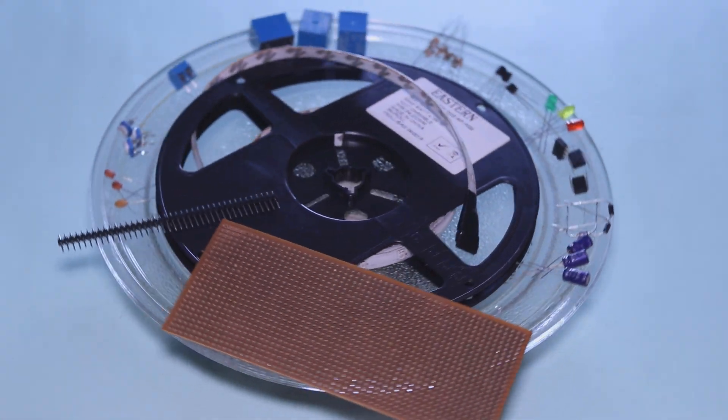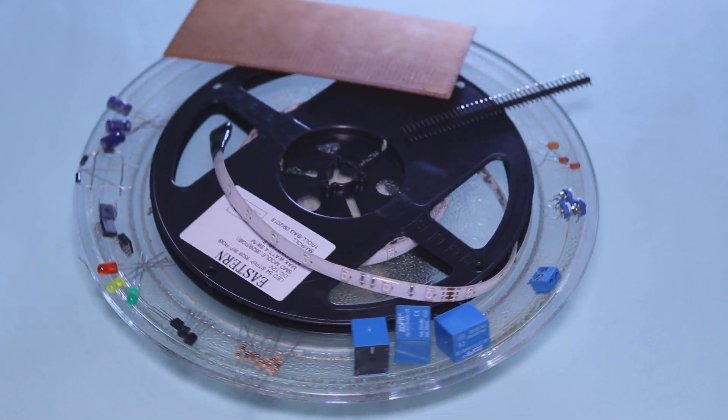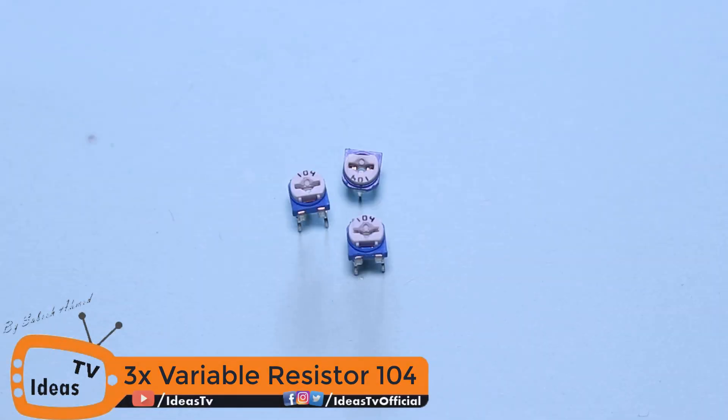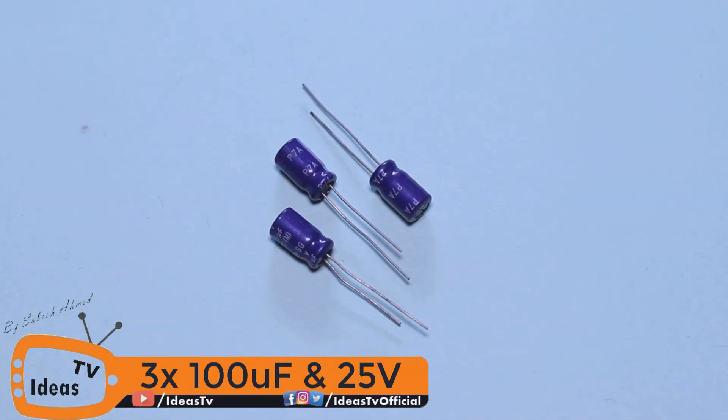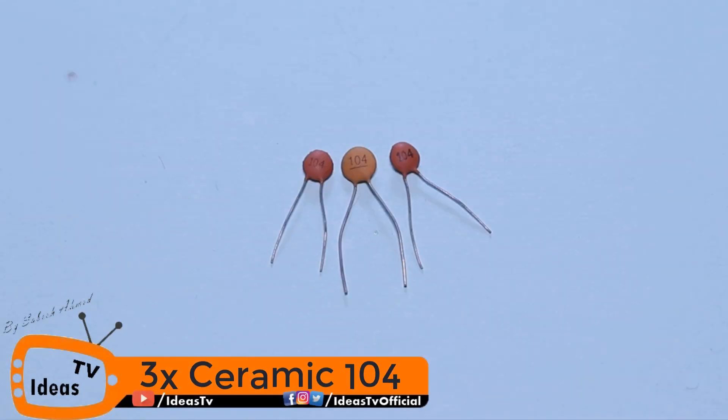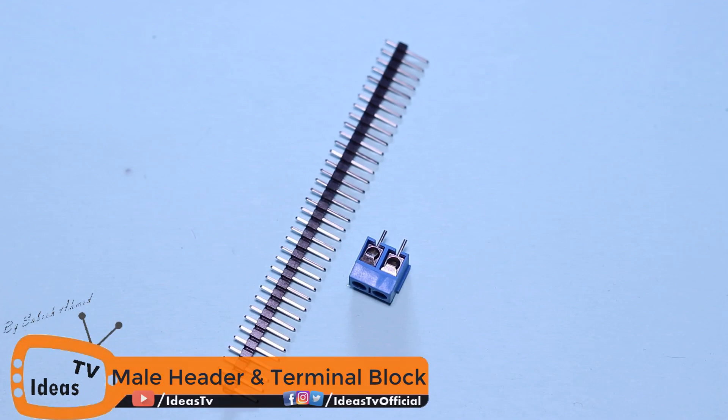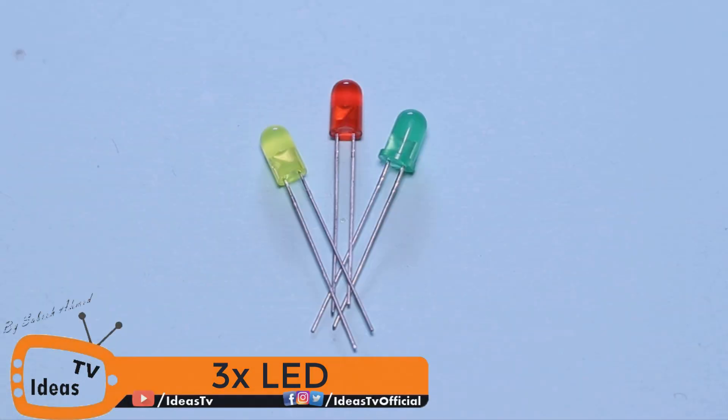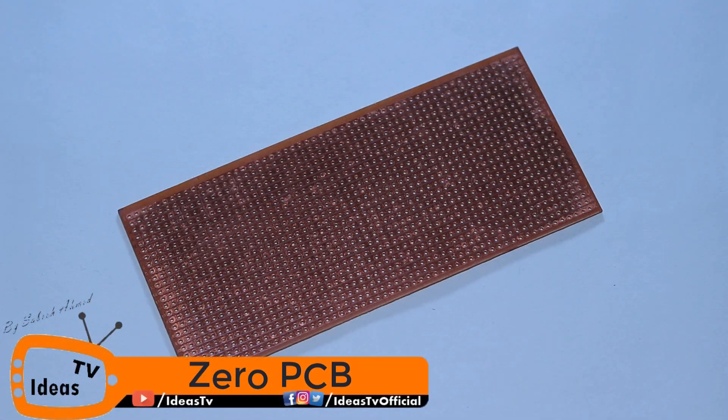These are all the components that you will need to assemble this circuit. Three 555 Timer ICs, three BC547 Transistors, three 104 Variable Resistors, 100uF 25V Capacitor, three 1N4007 Diode, three 104 Ceramic Capacitor, six pieces of 1K and 10K Ohms Resistor, three 6V Relays, Male Header and Terminal Block, three LEDs, and a zero PCB Board.